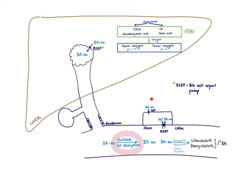The bile acids exit on the basolateral side via the OST transporter and then enter the enterohepatic circulation, showing up in the liver and being dumped into the bile again to do their job once more. This recycling is very effective — 90% of the bile acids are recycled.